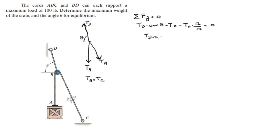So the tension in D, sine of theta, minus 1.923 tension in A is equal to zero. This means that the tension in D, sine of theta, is equal to 1.923 tension in A. Let's call this equation 1.